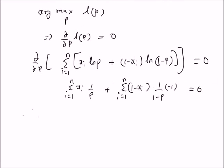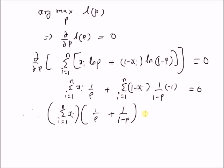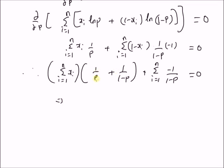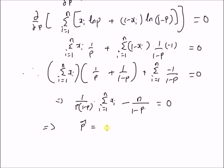By using simple algebra, we can rewrite this equation as: summation from i=1 to n of x_i times (1/p) minus summation from i=1 to n of (1-x_i) times (1/(1-p)) equal to 0. This simplifies to (1/(p(1-p))) times the summation from i=1 to n of x_i, minus n times (1/(1-p)) equal to 0. This implies that p-hat equals (1/n) times the summation from i=1 to n of x_i.